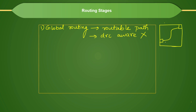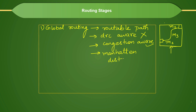During global routing, the tool assigns layers to nets for each segment as part of congestion calculation. It calculates the number of overflows in each layer, so it is congestion aware — it knows which layer has how many tracks for a particular net. It is also aware of routing and placement blockages. For distance calculation, the tool uses Manhattan distance rather than Cartesian (direct straight-line) distance.